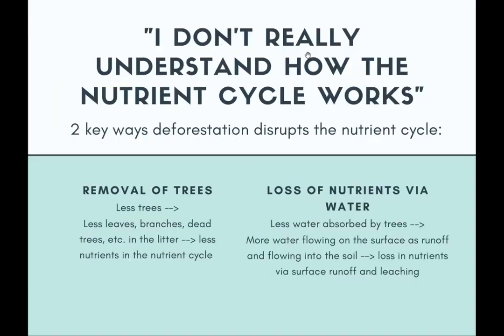Another comment: I don't really understand how the nutrient cycle works. I'm not going to go through it again — if you have more questions, you can come and consult me. But I want to highlight two key ways deforestation disrupts the nutrient cycle. The first way is through the removal of trees. When you cut down trees, you later have less leaves, less branches, and less dead trees in the litter. Therefore, there's less decomposition and less nutrients released from plant material into the nutrient cycle — on the whole, you get less nutrients in the nutrient cycle.